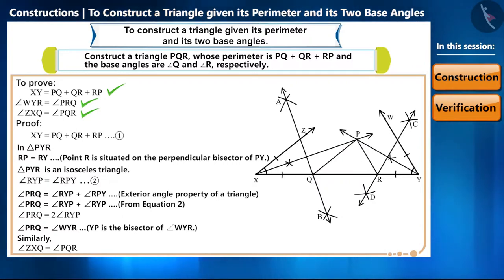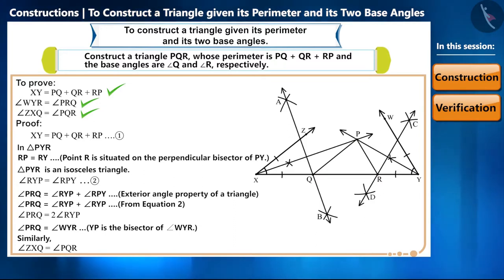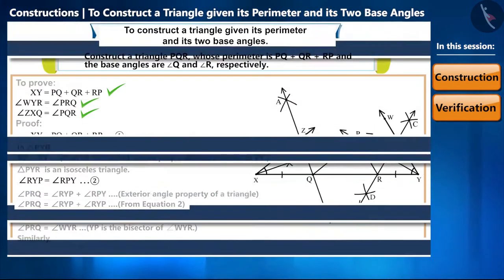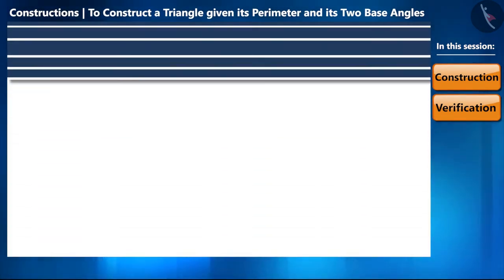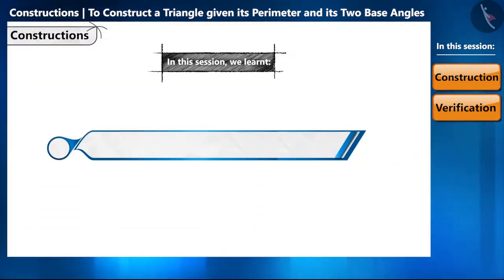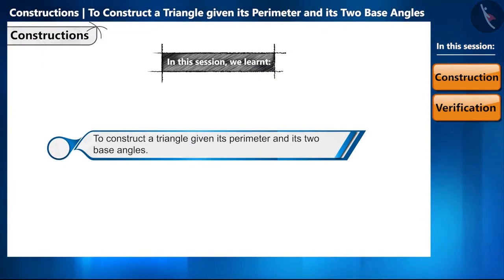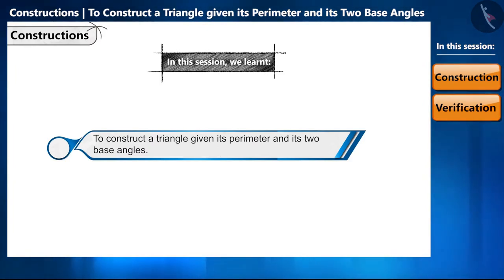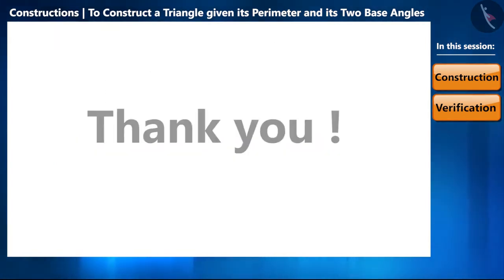In the next session we will solve some questions based on this construction and construct triangles according to given measurements. In this session we learned to construct a triangle given its perimeter and its two base angles. Meet you in the next session, thank you.